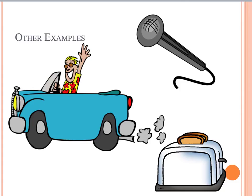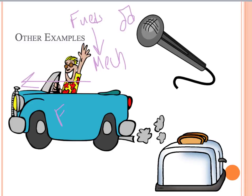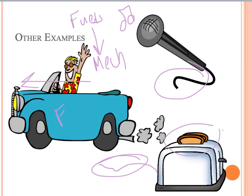Some other brief examples: when we drive cars, we're converting chemical energy from fuels into the ability for the car to move, which is mechanical energy. From microphones, we convert acoustic or sound energy into electrical energy, which helps to amplify our voices. And for toasters — think about how toasters get plugged in — we use electrical energy, which enters the toaster and converts into thermal or heat energy so that we can have some delicious toast.